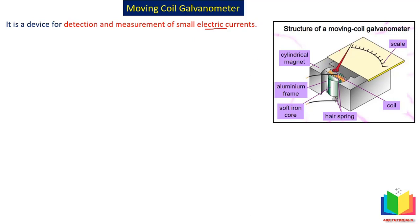Suppose you have knowledge of the current flowing through the galvanometer — let's call it Ig — and you also know the resistance of this galvanometer. For example, if the galvanometer resistance is G, then Ig multiplied by G is the potential difference. So galvanometer can be used to measure small electric currents as well as small potential difference in the circuit.